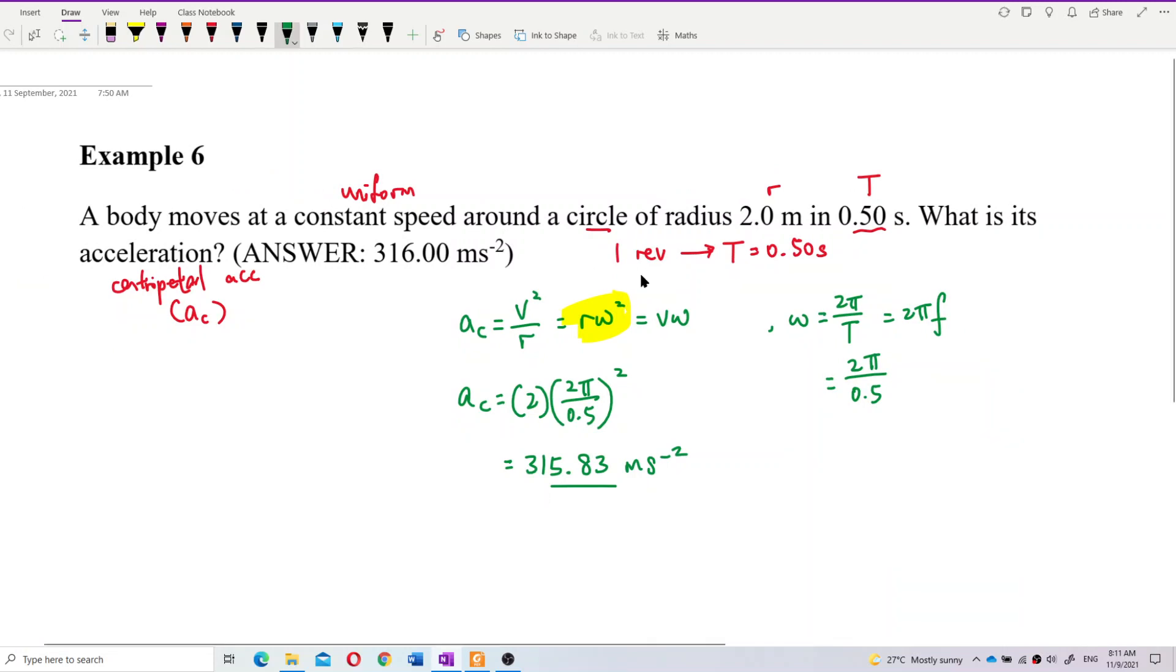So the answer is correct. Let's look at the answer. It's correct. 315 or 316, corrected to 2 decimal places. So I think that's it for this question. The AC using R omega square.